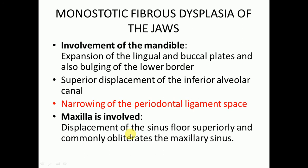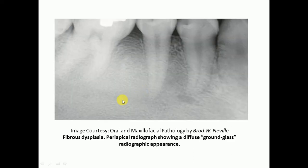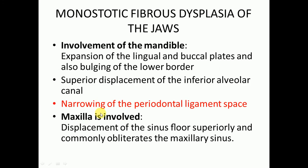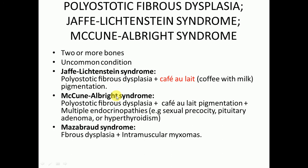If the maxilla is involved, it will lead to superior displacement of the sinus floor and commonly obliterates the maxillary sinus. The most characteristic radiographic feature in monostatic fibrous dysplasia is increased density of the base of the skull, involving the occiput, sphenoid, roof of the orbit, and frontal bones — present in cases where the maxilla is involved.